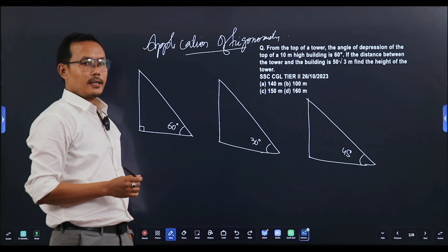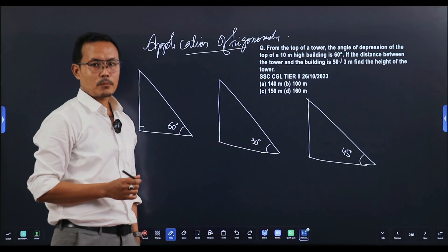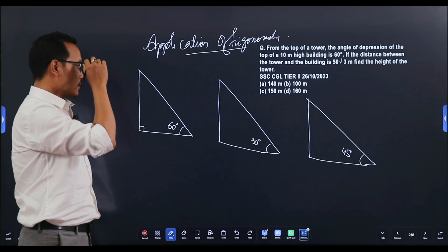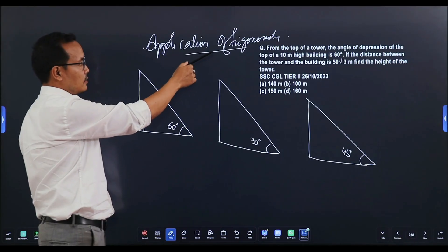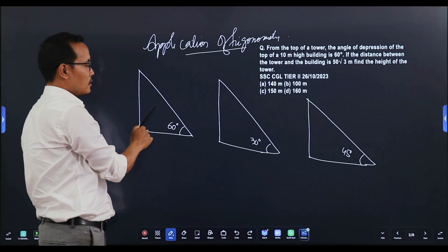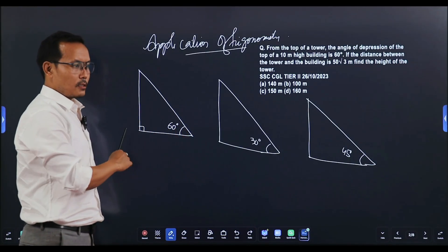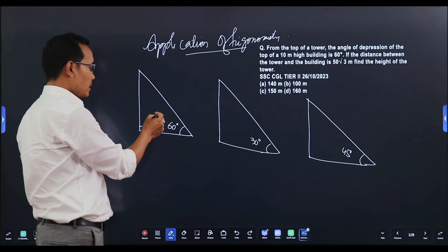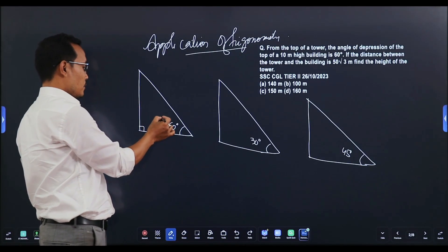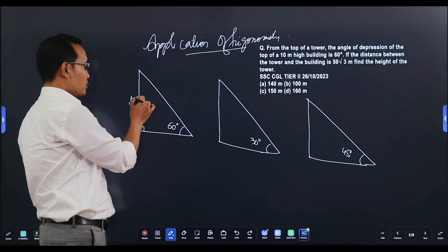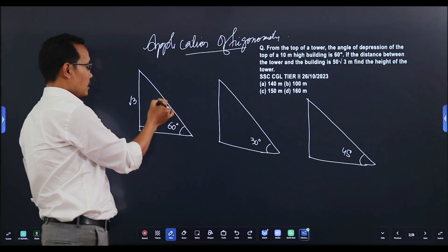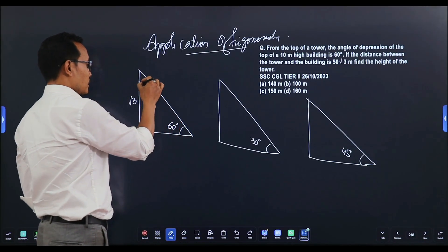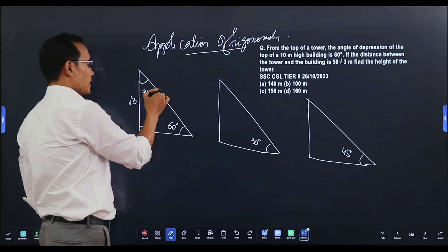It depends on the height and distance. The standard angles have a trigonometry ratio in the right triangle, and it depends on height and distance. There is a corresponding standard value. For 60 degrees, consider the ratio between the sustained rate.